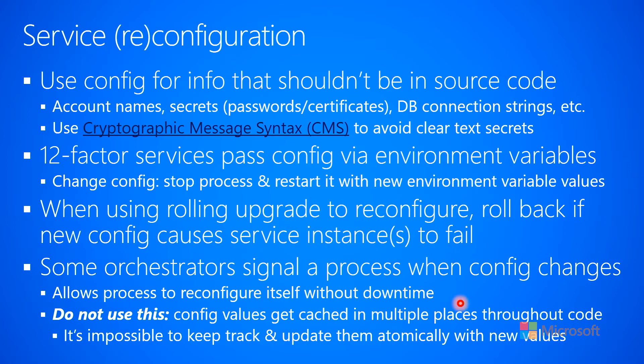When you want to change the configuration, this means you are changing environment variables. The first thing you'll need to do is stop the process — gracefully shut it down using the atomic counter mechanism. Then you reconfigure the environment variables and restart the process using those new environment variables. It's kind of like doing an upgrade, but we're not upgrading the code; instead we're upgrading the configuration that the code will be using.